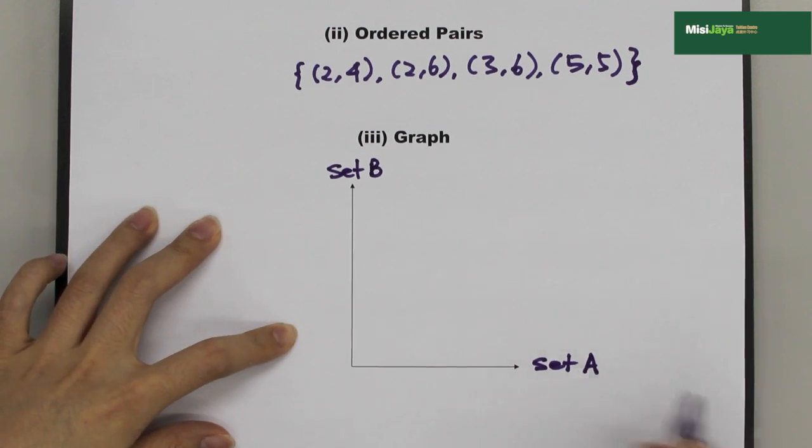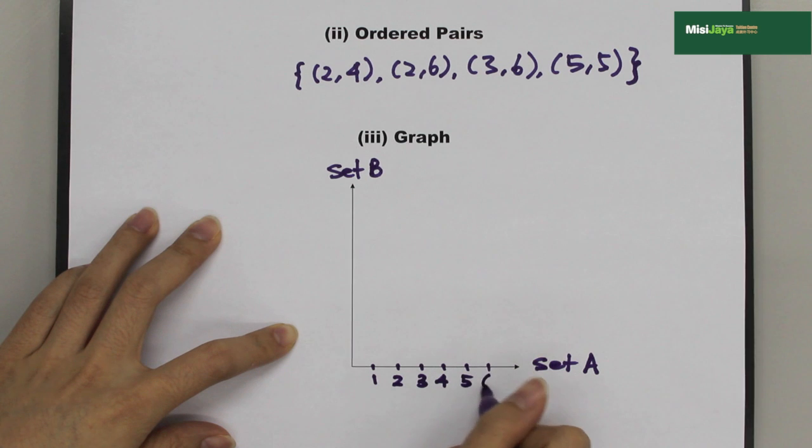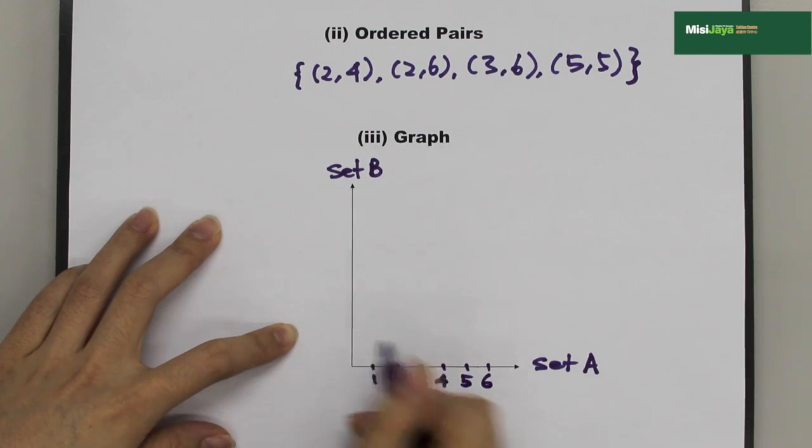Then on the X axis, we label from 1 to 6. And on the Y axis, we also label from 1 to 6.